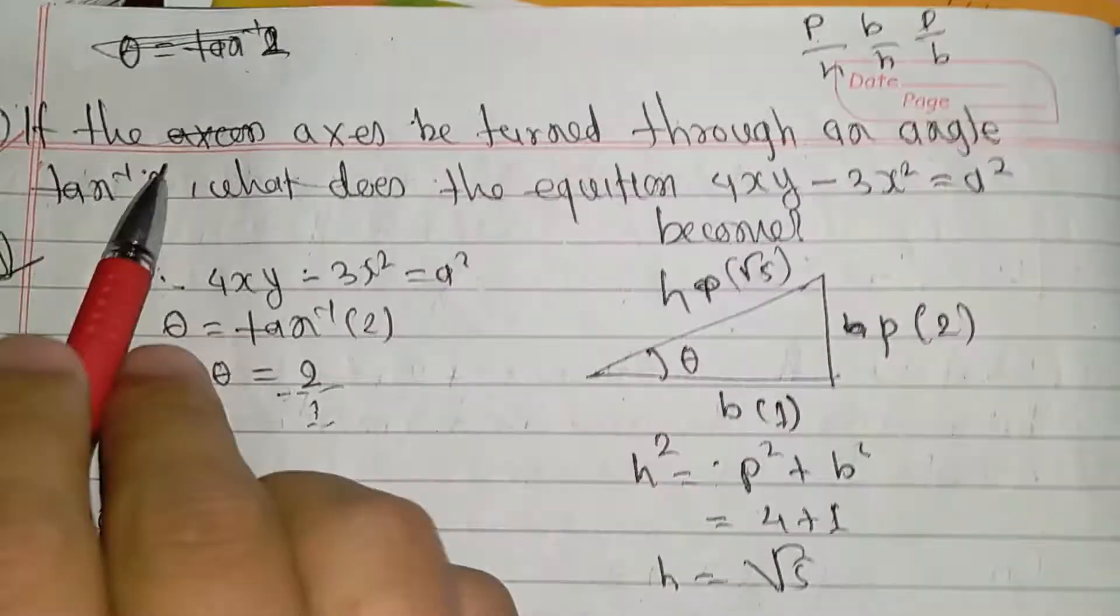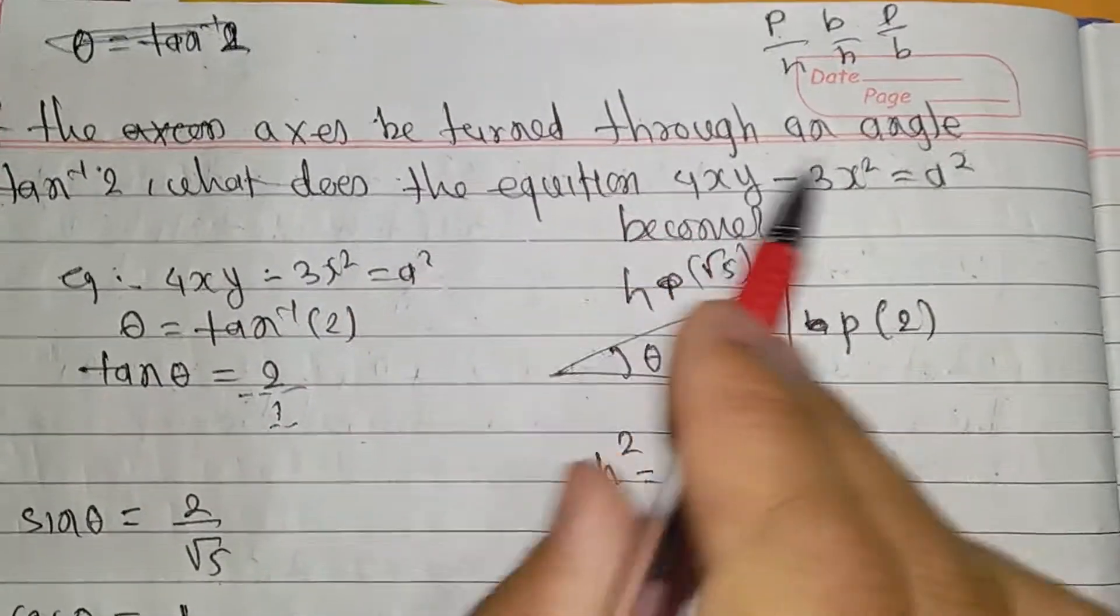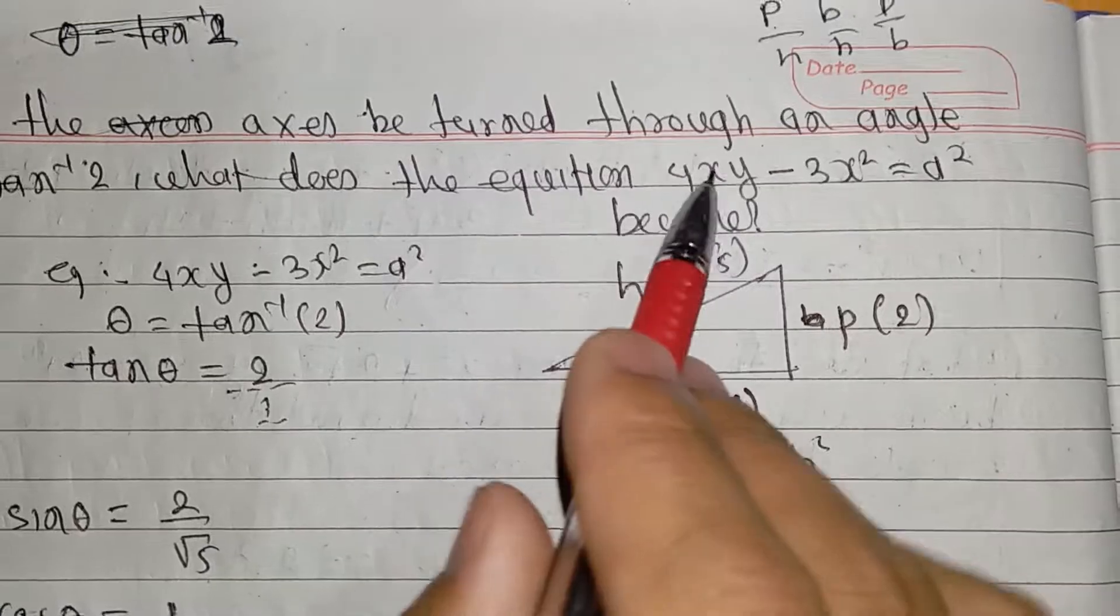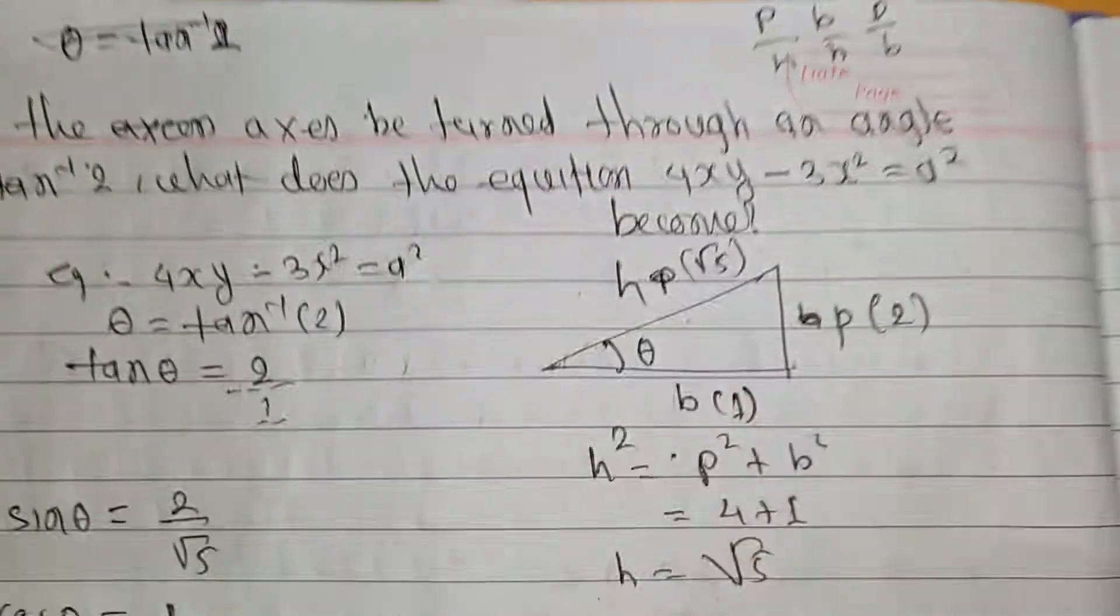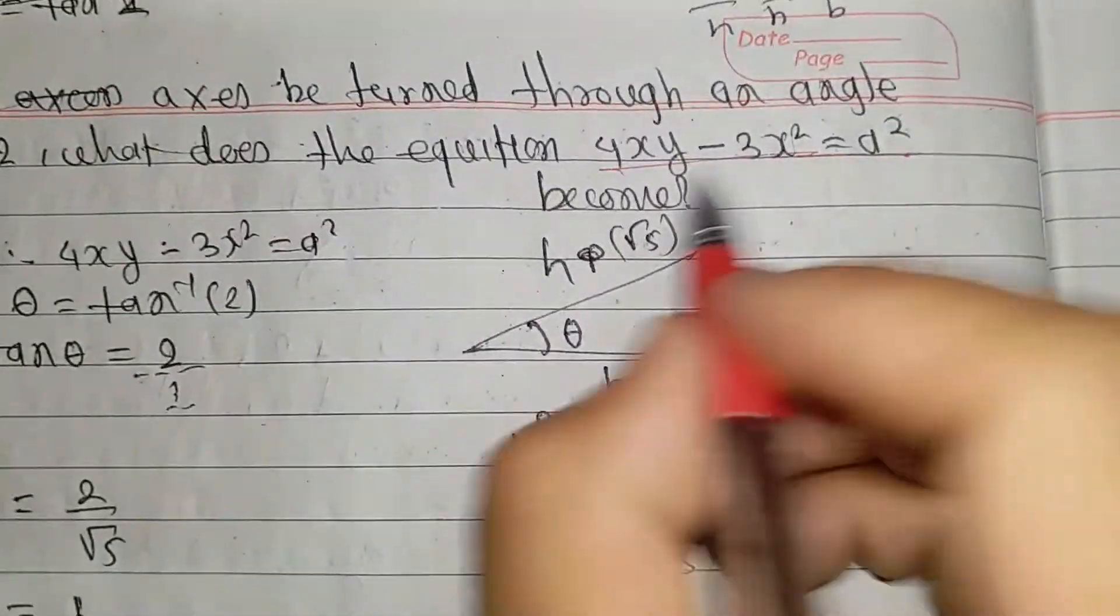If the axes be turned through an angle, what does the equation 9xy minus 3x square equals a square become? This is a straight line equation.